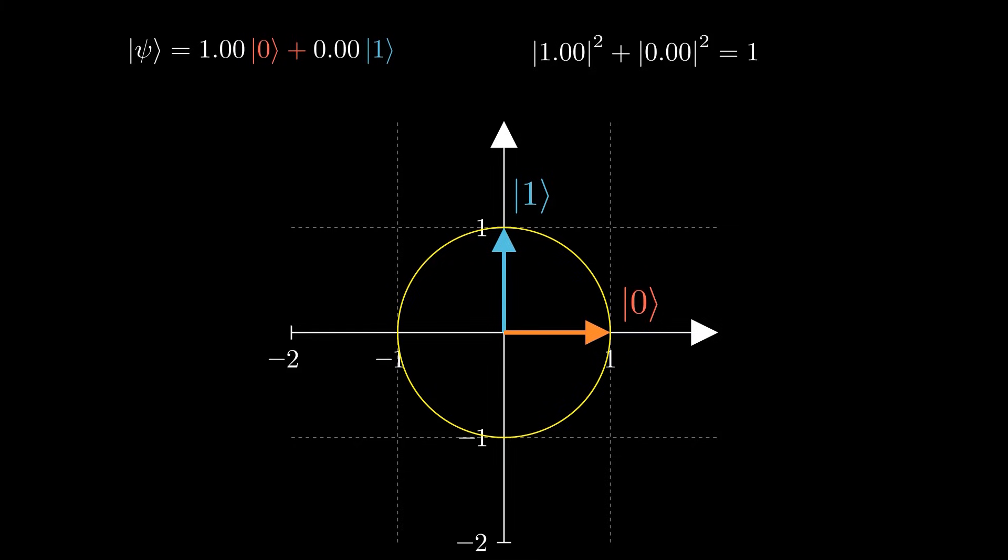I really can't describe just how important it is that whatever state we have must lie on the circle. If we end up inside the circle, we somehow got a total probability less than 1. If we ended up on the outside, we somehow got a total probability more than 1. So whenever we use a quantum logic gate on our qubits, regardless of what their current state is, the new state must also be exactly on the circle.